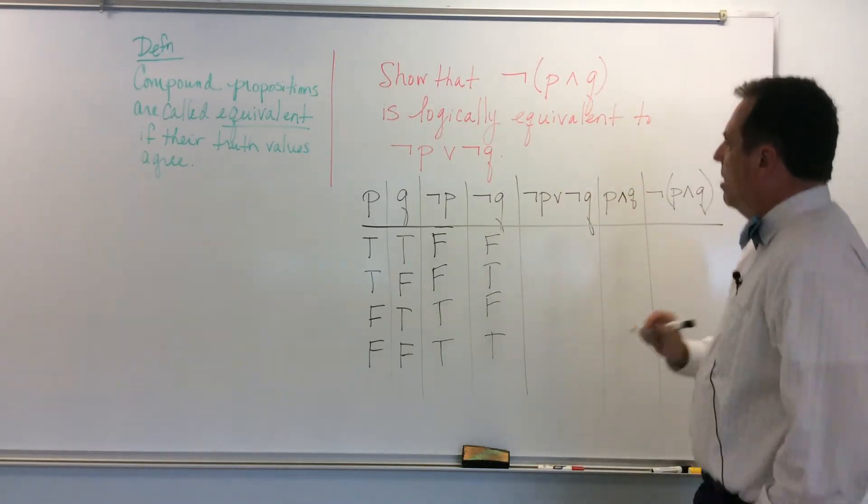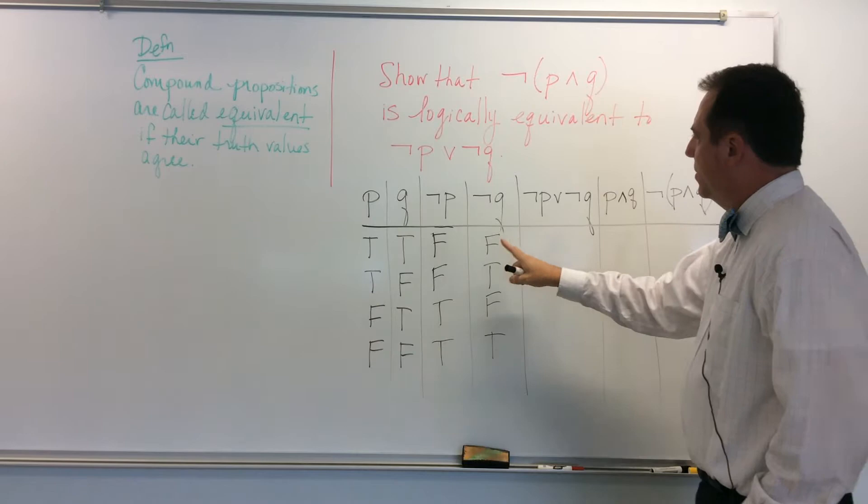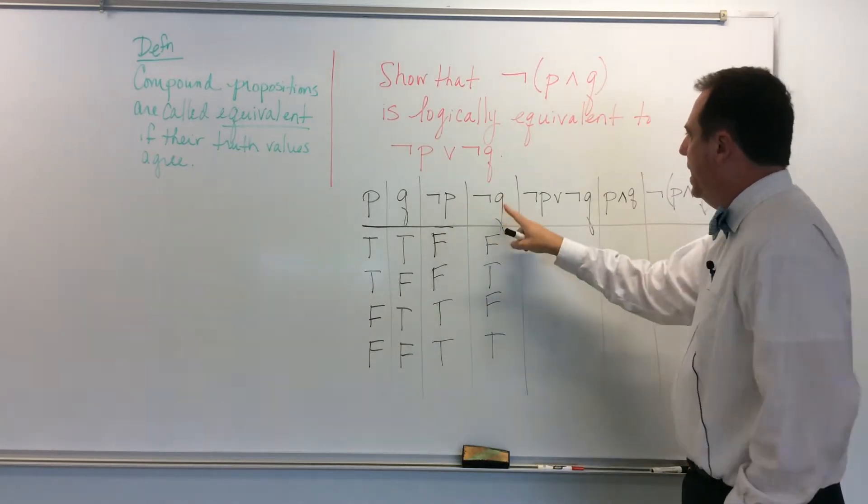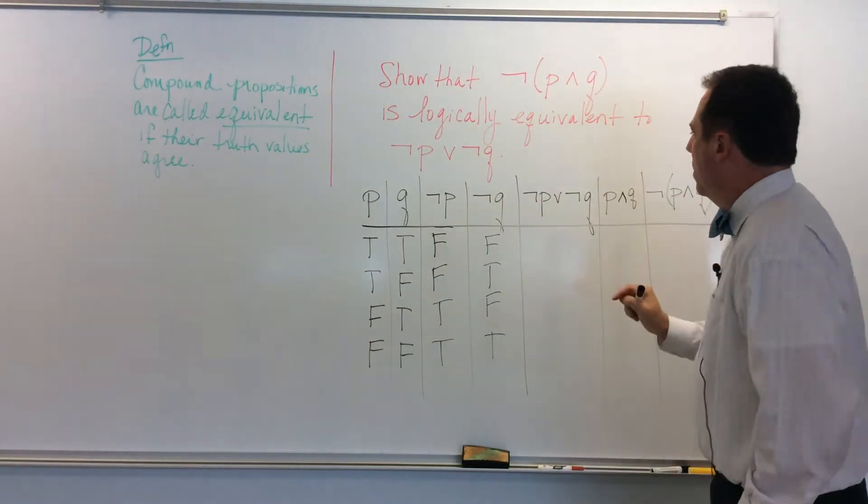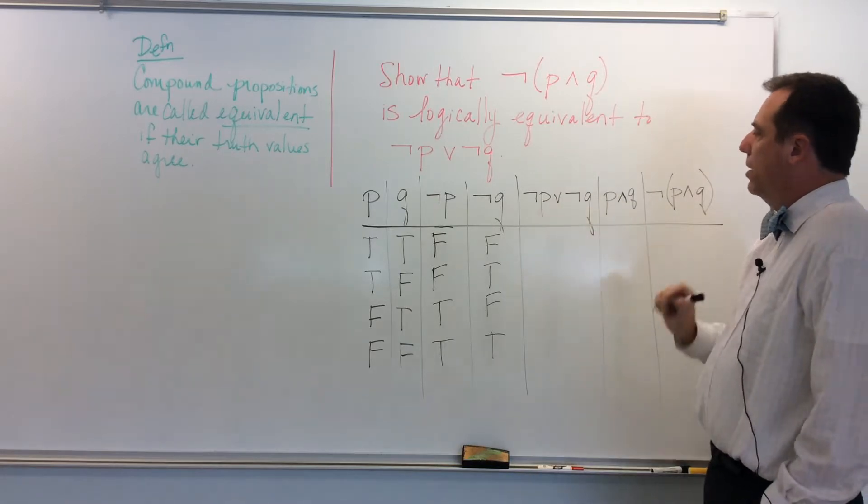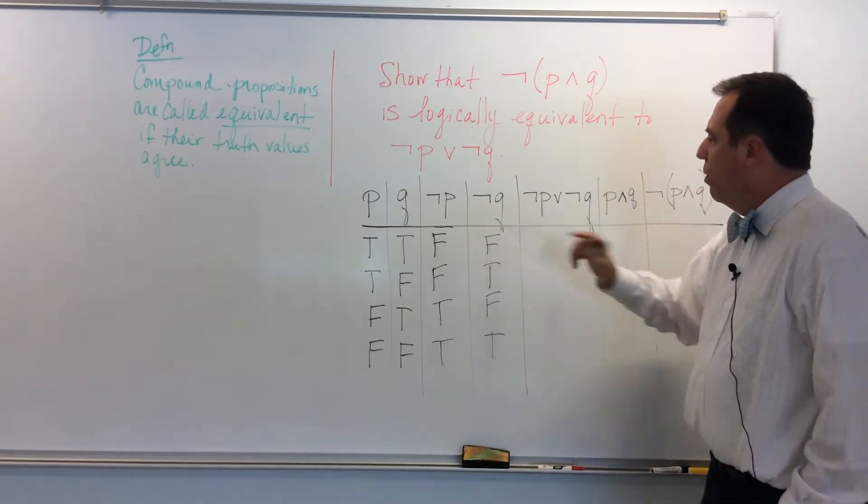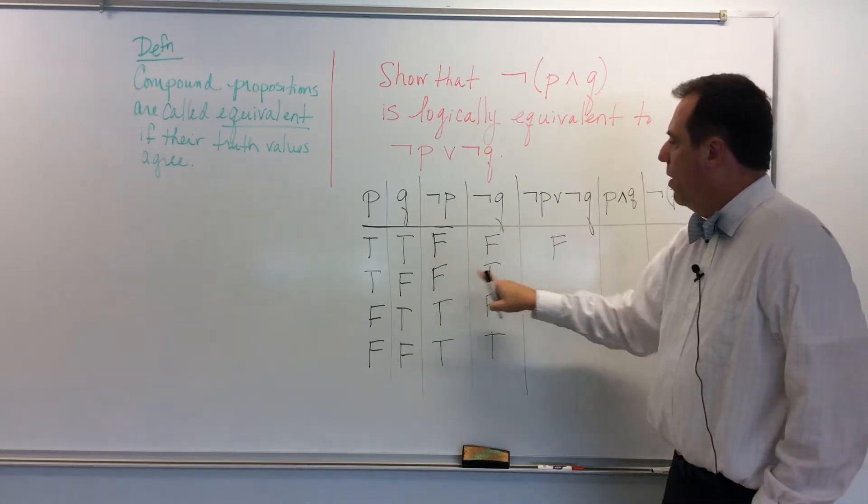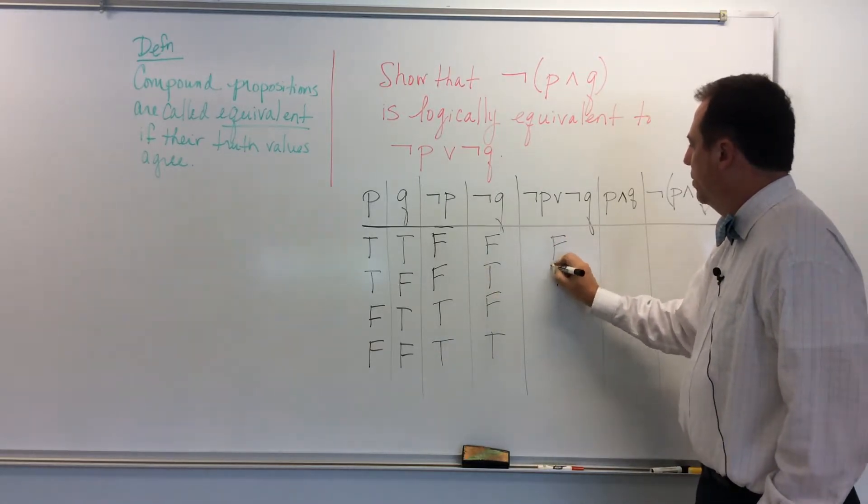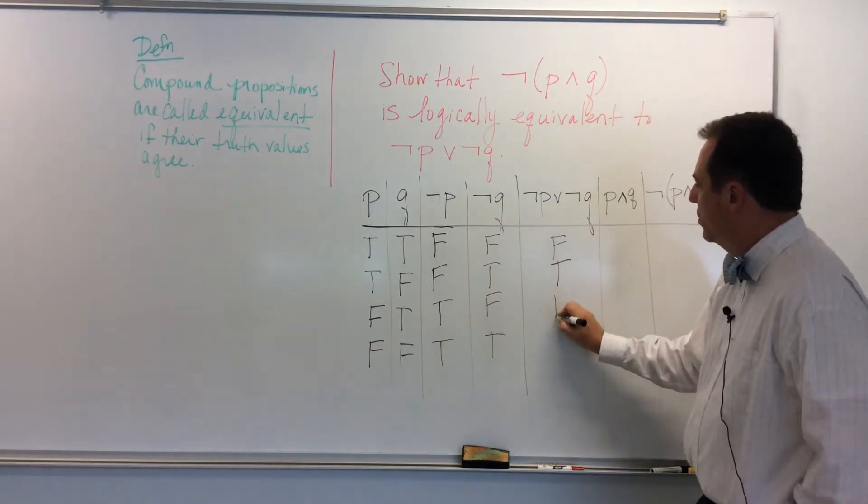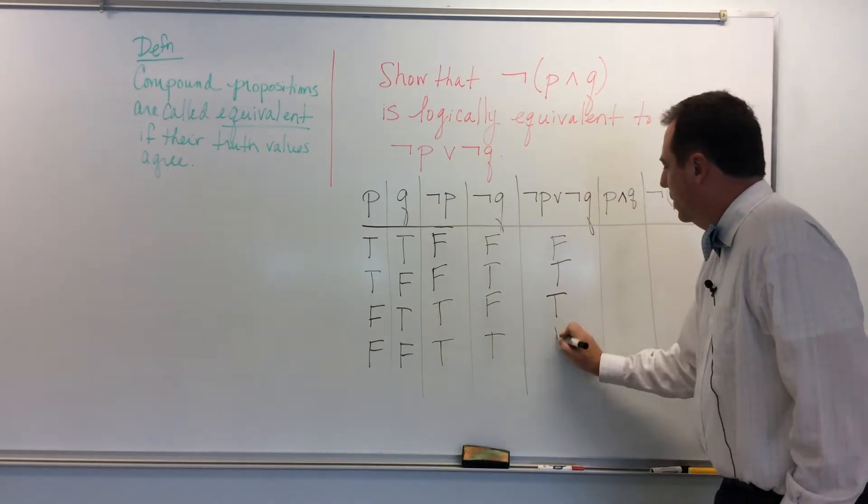And for this column, I've got to find this disjunction of not P, not Q. So it's not P or not Q. So false or false is definitely false. False or true is definitely true. True or false is true. True or true is true.